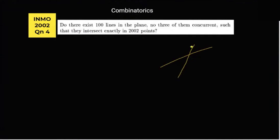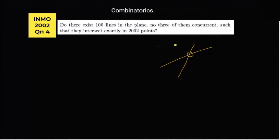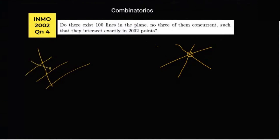So if these are two lines and the concurrent point is where they intersect, it is given that no three of them are concurrent. This means no three lines pass through a single point or intersect at a single point. So each pair of lines can either be parallel or intersect at most one point.